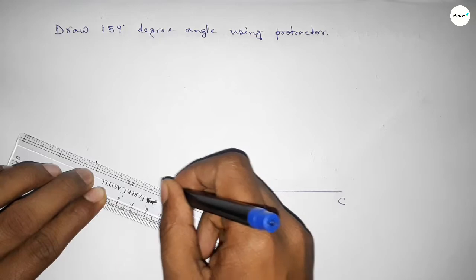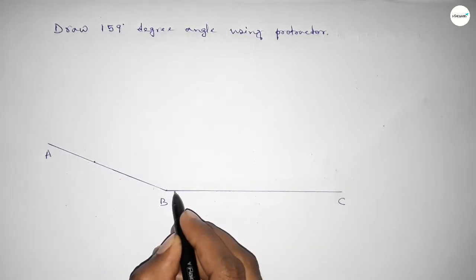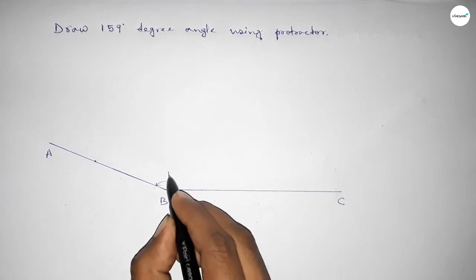Taking here point A. So angle ABC, up to this, this is a 159 degree angle.